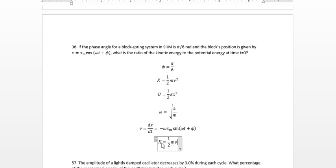One half mv squared. So, that's going to be one half of m. Now, v squared is going to be omega squared xm squared sine squared of omega t plus phi.